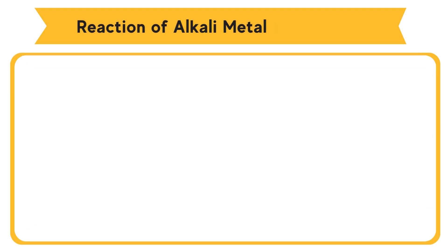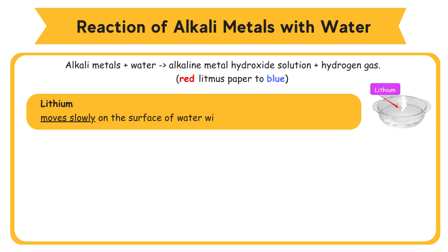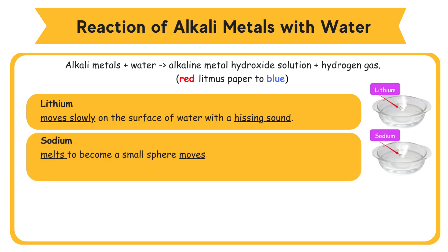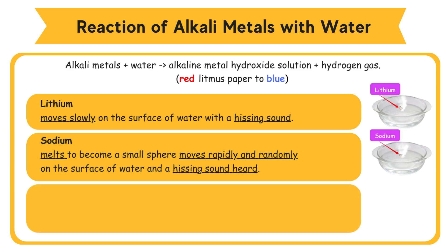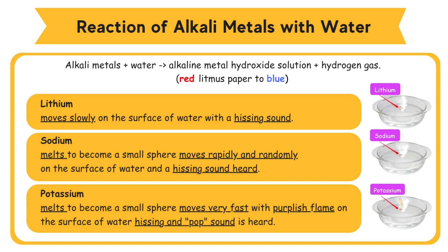Reaction of alkali metals with water: alkali metals react actively with water to produce alkali metal hydroxide solution and hydrogen gas. The metal hydroxide turns red litmus paper to blue. Lithium moves slowly on the surface of water with a hissing sound. Sodium melts to become a small sphere, moves rapidly and randomly on the surface of water, and a hissing sound is heard. Potassium melts to become a small sphere, moves very fast with a purplish flame on the surface of water, and a hissing and popping sound is heard. The reactivity of alkali metals toward water increases from lithium to sodium to potassium.